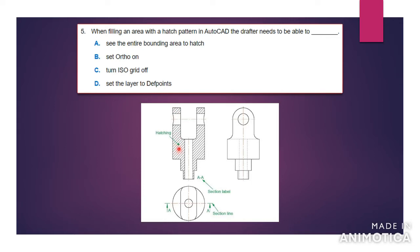In order to draw the hatches, you would need to see the entire bounding area to hatch. In AutoCAD, you won't be able to hatch any drawing if you don't have a totally bounded or totally closed area. You see lines that are connected to each other — if there are any spaces between the lines, you won't be able to hatch. So the answer would be you have to see the entire bounding area to hatch it.